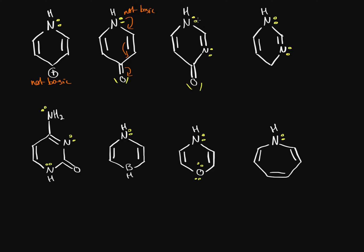Now what about this next one? The ring structure right now has four pi electrons. To make it aromatic, this nitrogen donates its lone pair to form a double bond, electrons shift around the ring, giving us six pi electrons — so it will be aromatic and resonance stabilization is preferred. So this lone pair on this nitrogen is not basic. However, this other nitrogen never used its lone pair for anything — it's still available — so this nitrogen is actually basic, with a lone pair available for abstracting a proton.